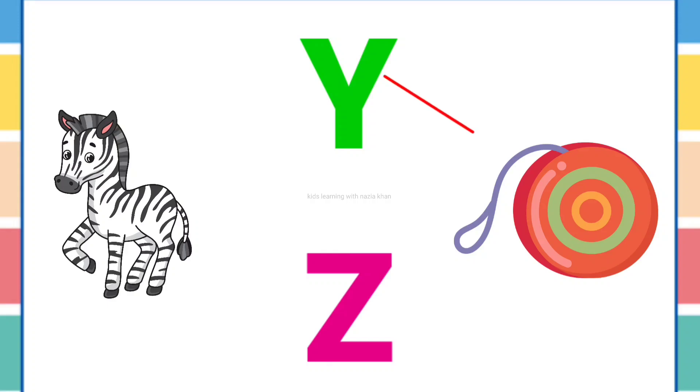Y, Z. Y is for yo-yo. Y, Y, yo-yo. Z is for zebra. Z, Z, zebra.